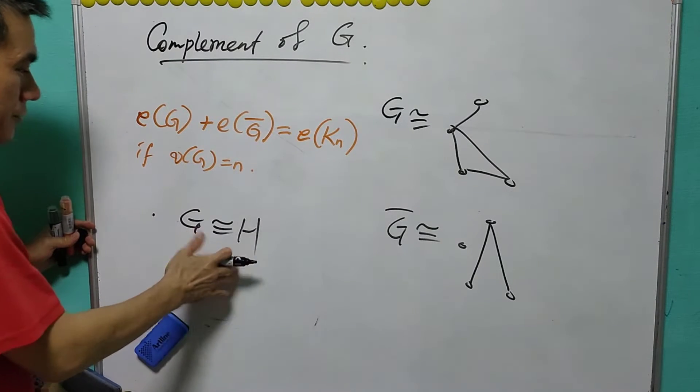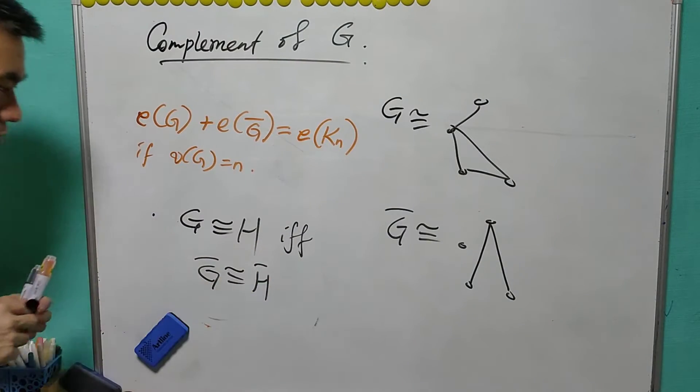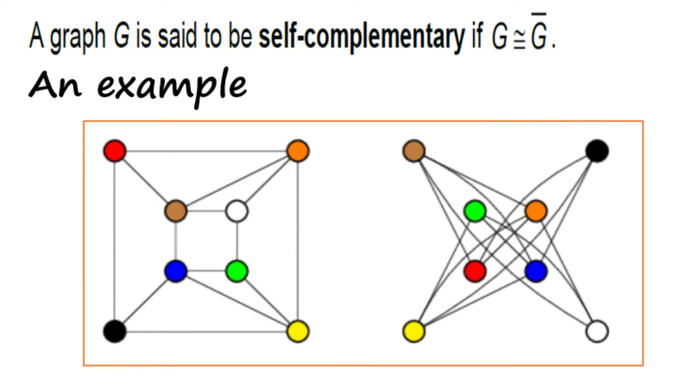We have these obvious results that two graphs are isomorphic if and only if their complements are isomorphic. A graph is said to be self-complementary if G is isomorphic to G bar.